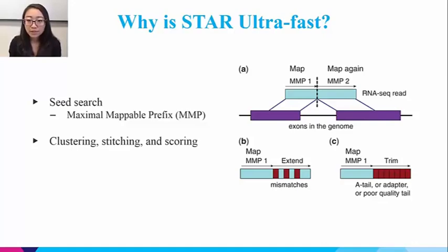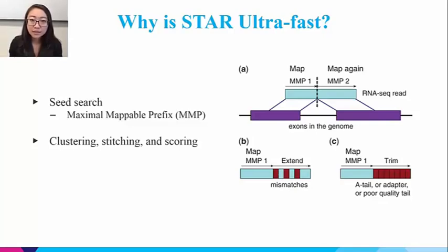The algorithm is implemented through uncompressed suffix arrays, which reduce the time complexity to logarithmic compared with other algorithms that are usually linear. In the second phase of the algorithm, STAR clusters the mapped reads to a selected set of anchored seeds and then stitches them together. This step allows for mismatches, deletions, insertions, and splice junctions. This also enables STAR to work with full-length RNA-seq reads generated by third-generation sequencers.